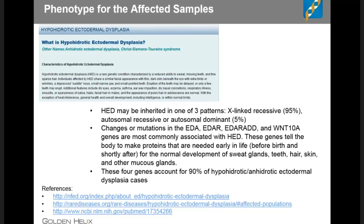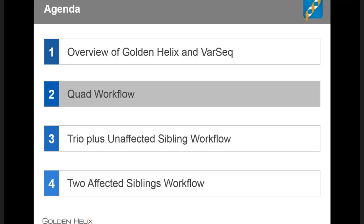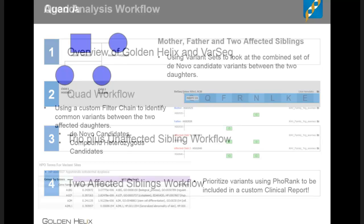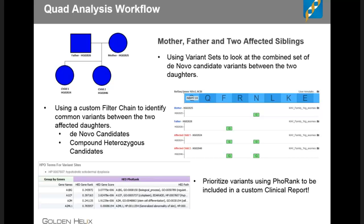Let's jump into VarSeq and begin looking at our quad workflow. For our quad workflow we have a mother, father, and two affected siblings. First I'll open the shipped trio template and determine the set of de novo candidates for each sibling combined. Then we'll jump to a project with a more customized template designed to find things in common between the two affected daughters — both de novo and compound heterozygous candidates — and then use full rank to prioritize variants before adding them to a clinical report.